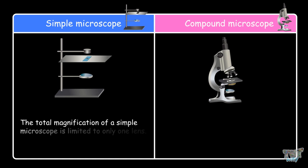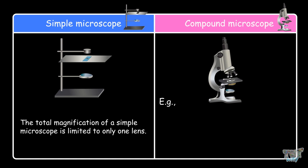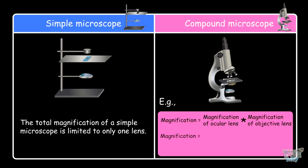The total magnification of a simple microscope is limited to only one lens. The total magnification of a compound microscope is the product of the magnification of the two lenses. For example, if the ocular lens has a magnification of 10 and the objective lens has a magnification of 10, then the total magnification of the compound microscope will be 100.